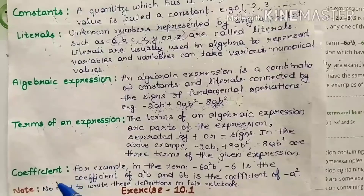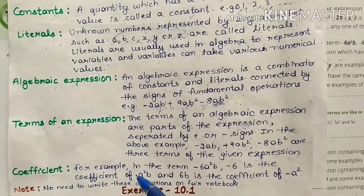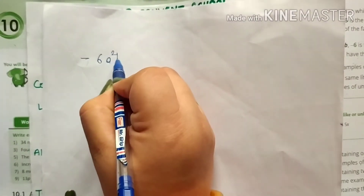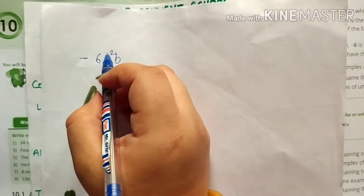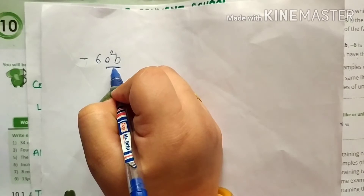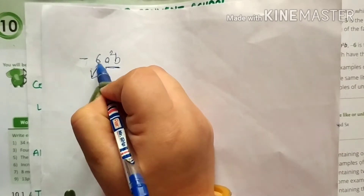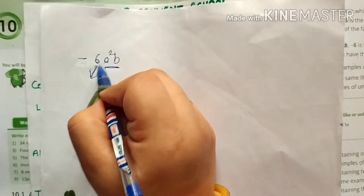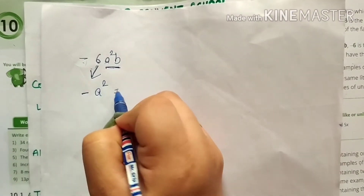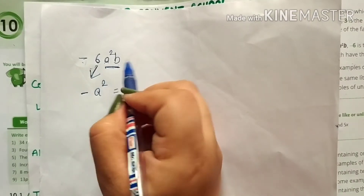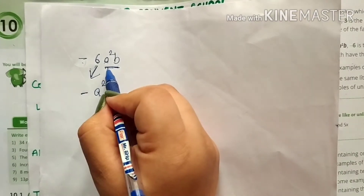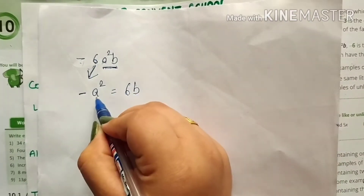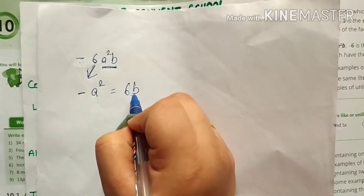Next is coefficient. To understand the coefficient, let us take an example: minus 6A square B. If I am asking you what is the coefficient of A square B? Then you will say minus 6 is the coefficient of A square B. Similarly, if I am asking what is the coefficient of minus A square, then the coefficient is 6B. Hope it is clear to you.